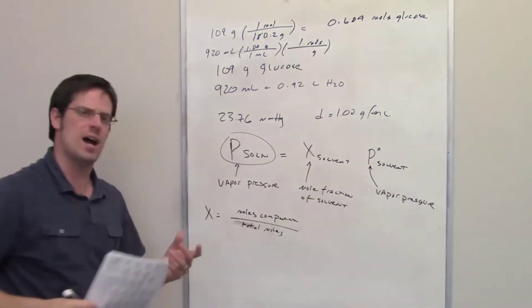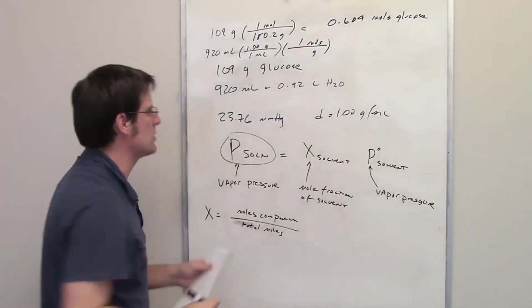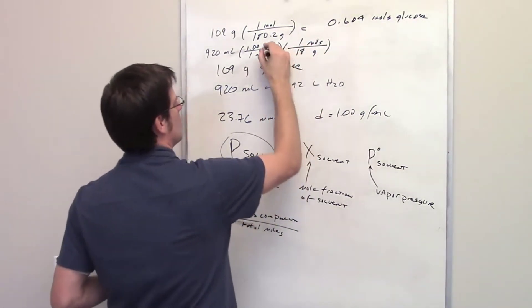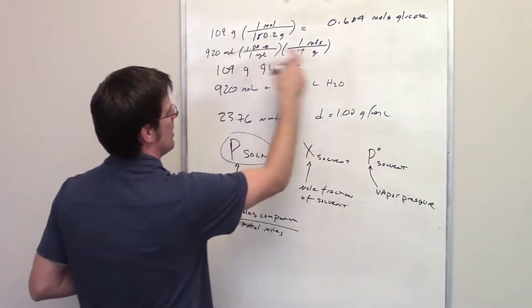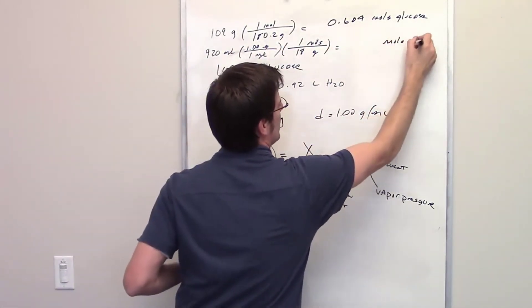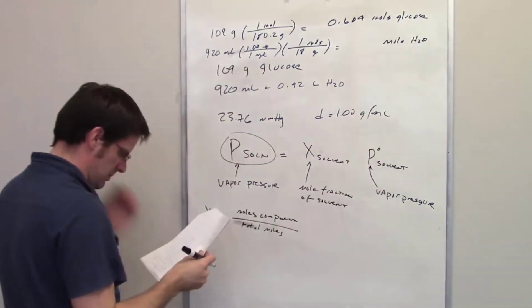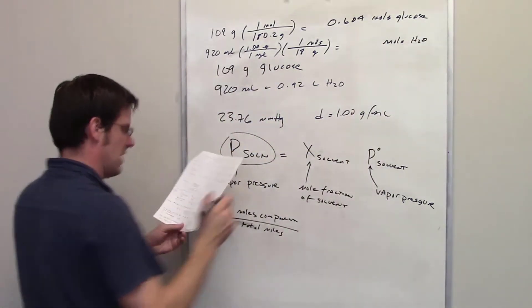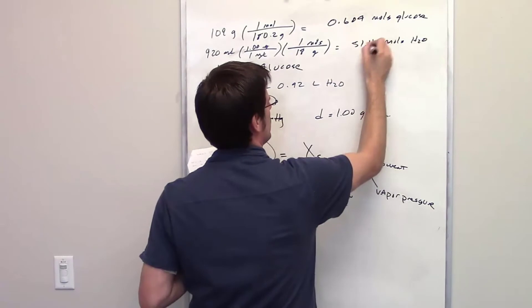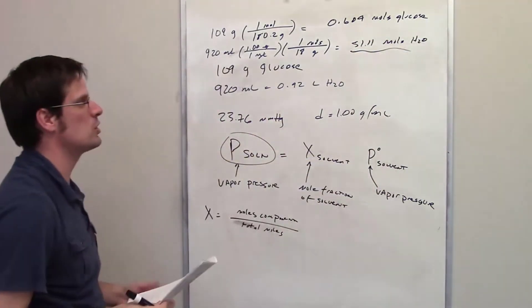1 mole of water weighs how much? Hydrogens are 1, oxygen's 16, that's 18 grams. So grams cancel each other out, mils cancel each other out, and I'm left with moles of water. That comes out to be 51.11 moles of water.